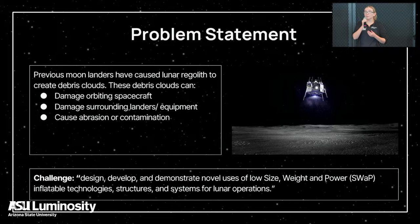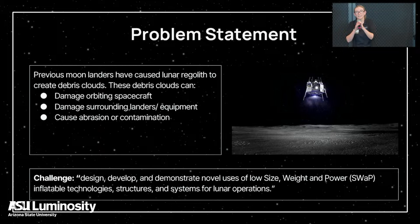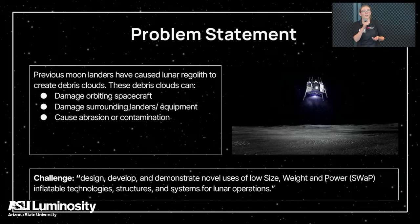This year's theme is inflatable structures for the Moon — designing, developing, and demonstrating novel uses of low size, weight, and power inflatable technologies, structures, and systems for lunar operations. It's very costly to send things to the Moon, especially if they're large or heavy, so by using inflatable structures you maximize your deployed-to-stowed volume ratio and minimize mass. With that in mind, we looked at the need for landing pads: when a lander lands on the Moon it generates a giant cloud of regolith causing abrasion and contamination of nearby systems, but you also want to land nearby to avoid long travel.